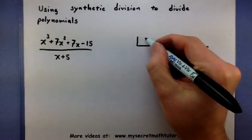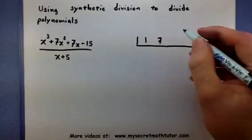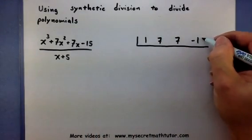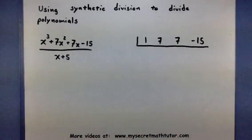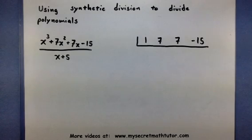So, I have a 1x cubed, a 7x squared, a 7x, and a minus 15. If you are missing any powers of x in here, so say I didn't have an x squared, you need to put in a zero placeholder for that missing power.